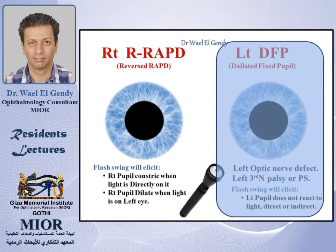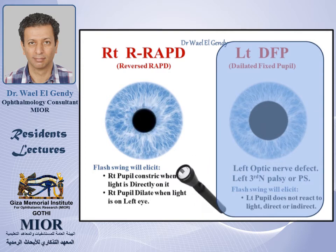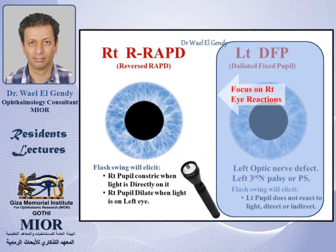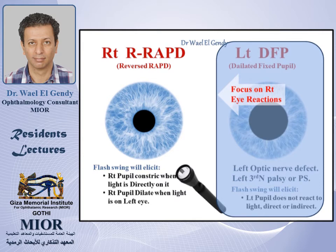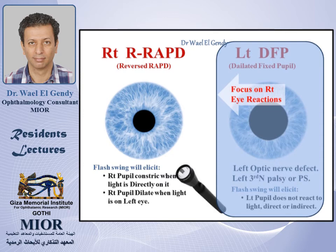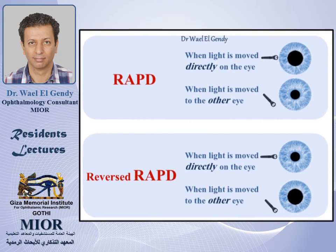We observe the right eye. When the flash of light points to the right eye, we get constriction. Then when the flash moves to the left eye, because the left eye has an afferent defect, the right eye will dilate. So, focusing on the right eye: you get constriction with direct light, and when you move it away from the right eye to the left eye, the right eye will dilate. This is exactly the opposite of what was happening in the left eye when it had a relative afferent pupillary defect — that's why it's called the reversed relative afferent pupillary defect.